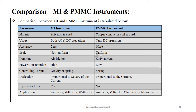Controlling torque is obtained by gravity or spring method for MI instrument and by spring method in PMMC. In the MI instrument, deflection is proportional to the square of the current; for PMMC, deflection is proportional to the current. There is hysteresis loss in MI instrument and no hysteresis loss in PMMC instrument. Ammeter, voltmeter and wattmeter are all applications of MI instrument. Ammeter, voltmeter, ohmmeter and galvanometer are all applications of PMMC instruments.